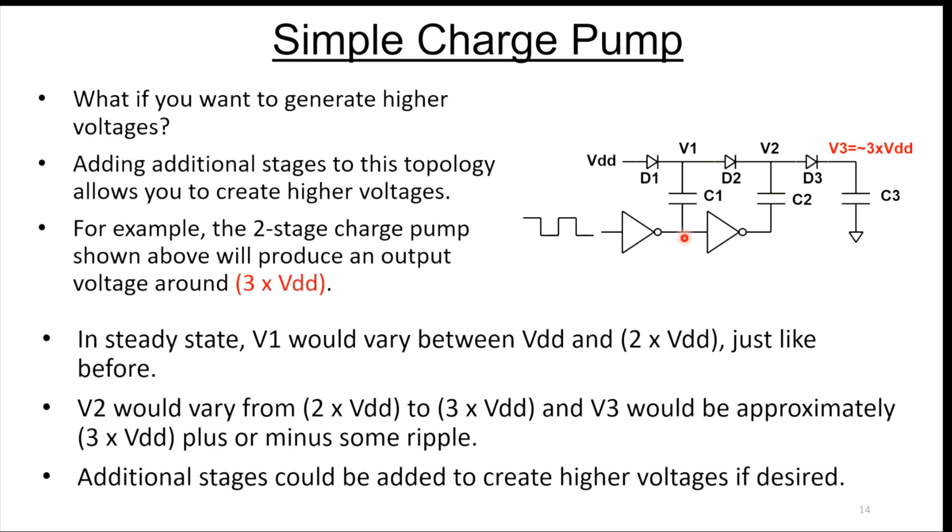What if you wanted to generate a voltage that's higher than just 2x VDD? Let's say you have a camera flash, and camera flashes require a lot of voltage to initiate it. But you're doing this with a 1.5-volt battery. You want to jack that 1.5-volt battery up to some very high voltage that you can use for your camera flash. Just doubling it is not going to be enough. You can do a multi-stage charge pump. I just showed two stages here where we've just added another stage of diodes and capacitors.